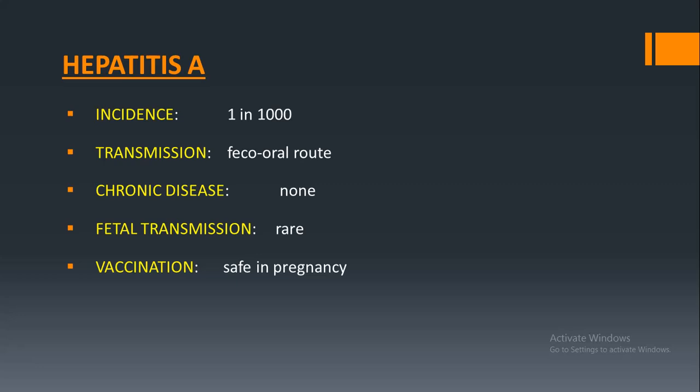Hepatitis A occurs with an incidence of around 1 in 1000. Transmission is by the feco-oral route, there is no chronic disease, and fetal transmission is extremely rare. Its vaccination is safe in pregnancy.